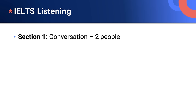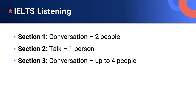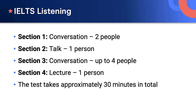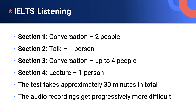There are four sections. In section one, you'll hear two people having a conversation. Section two will usually be a single person giving instructions. Section three is also a conversation but with more people and in an academic context. In section four, you'll hear one person giving an academic lecture. The test takes about 30 minutes in total, including time to read the questions before each section and time to check your answers. The audio recordings and questions get more difficult as you progress through the test.